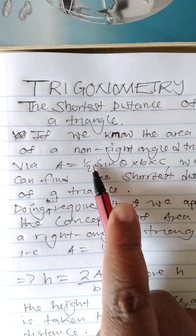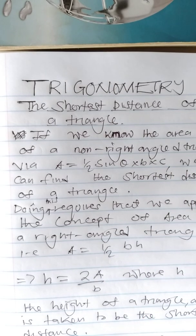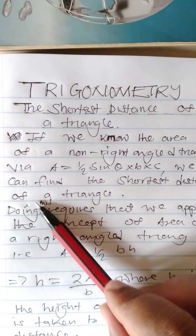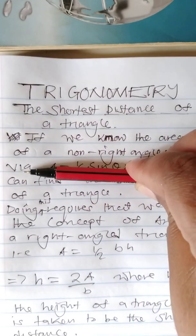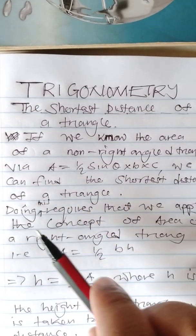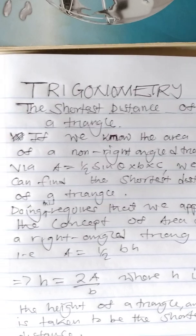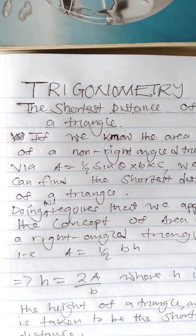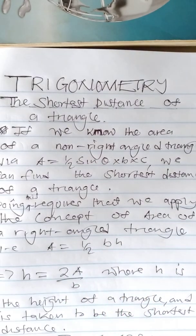...the area is equal to one half multiplied by sin theta multiplied by b multiplied by c. This formula was presented in the previous video. We can find the shortest distance of a triangle. So if we know the area of a non-right-angle triangle, we can attempt to calculate the shortest distance. Doing this requires that we apply the concepts of area of a right-angle triangle,